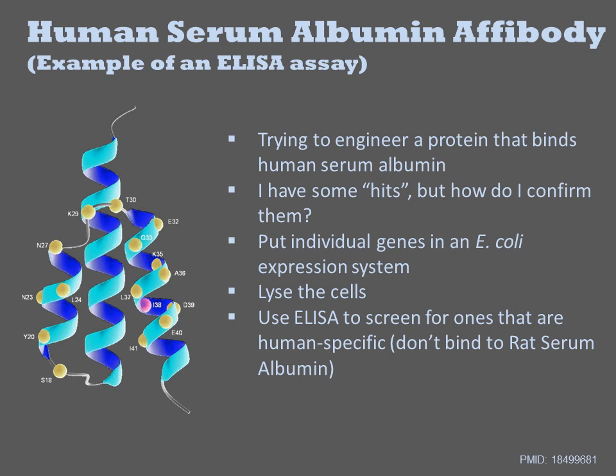As an example, consider that we wish to engineer a protein that binds specifically to human serum albumin. Perhaps I designed a protein in silico and now wish to test whether it does what it is designed to do. In this case, it is an alpha-body, which are short proteins derived from protein A that I have engineered to bind human serum albumin.